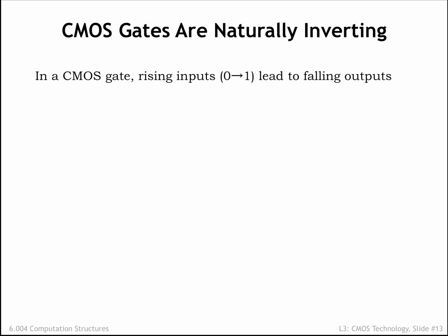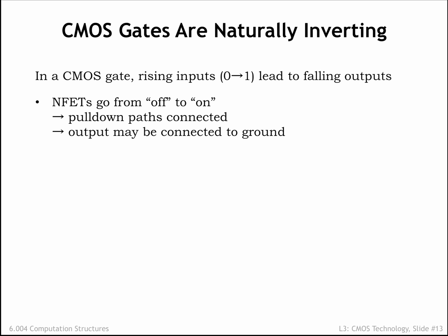Using CMOS, a single gate — a circuit with one pull-up network and one pull-down network — can only implement the so-called inverting functions, where rising inputs lead to falling outputs and vice versa. To see why, consider what happens when one of the gate's inputs goes from 0 to 1: any NFET switches controlled by the rising input will go from OFF to ON, which may enable one or more paths between the gate's output and GND.